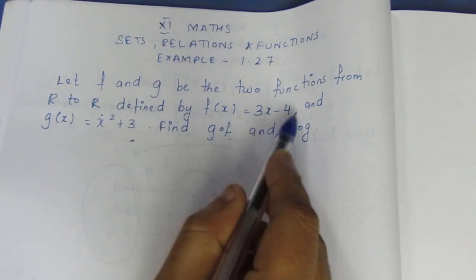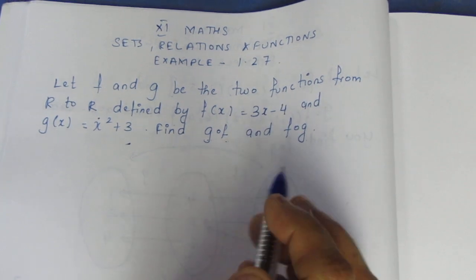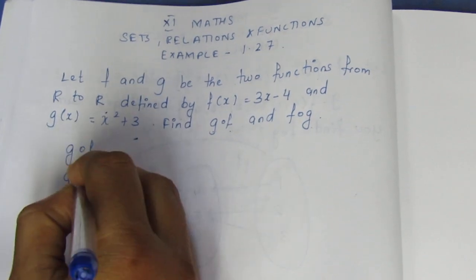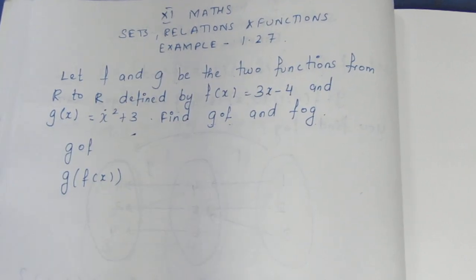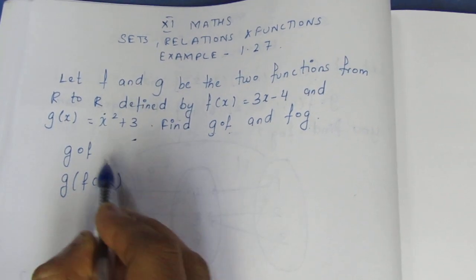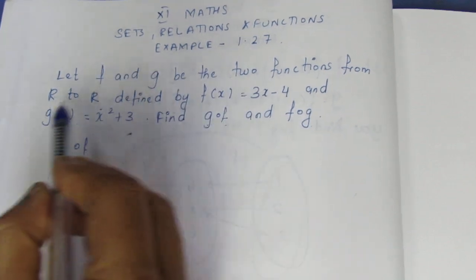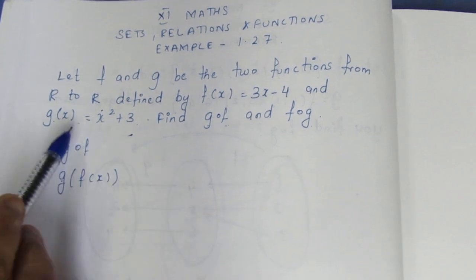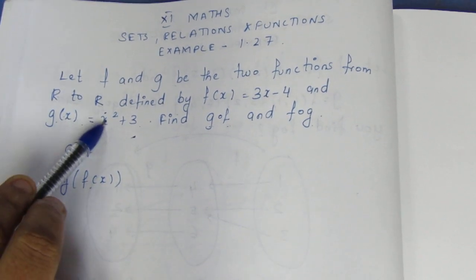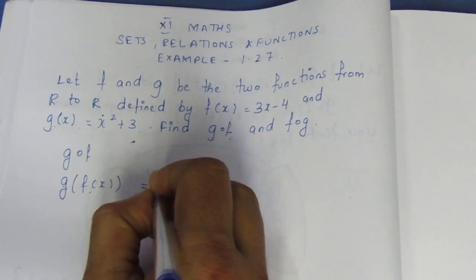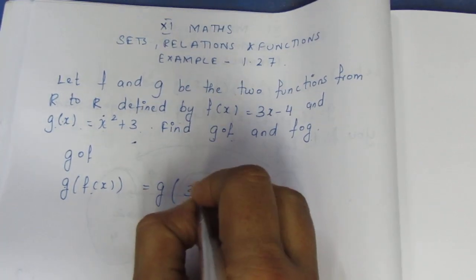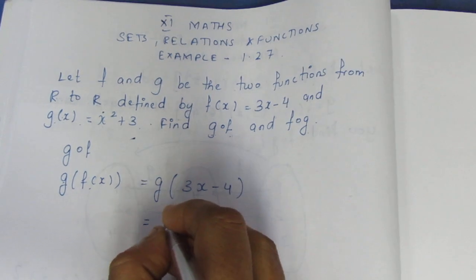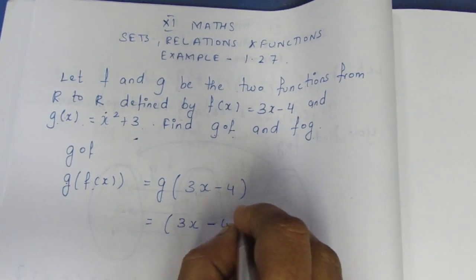So g composite f. You can write g of f of x. g is equal to x square plus 3, so g of f of x means x takes the value of f of x, which is 3x minus 4. So g of f of x equals 3x minus 4, the whole square, plus 3.